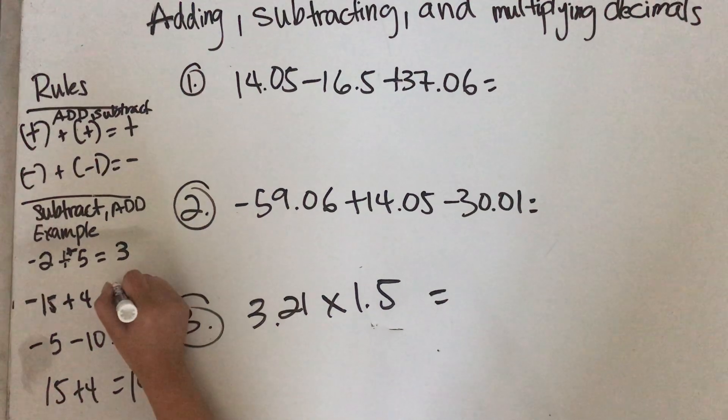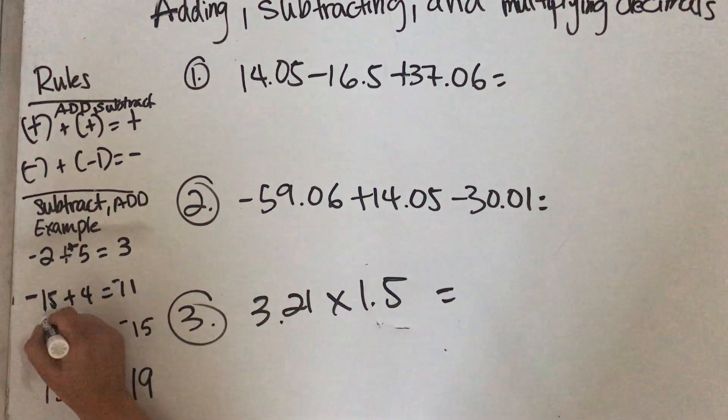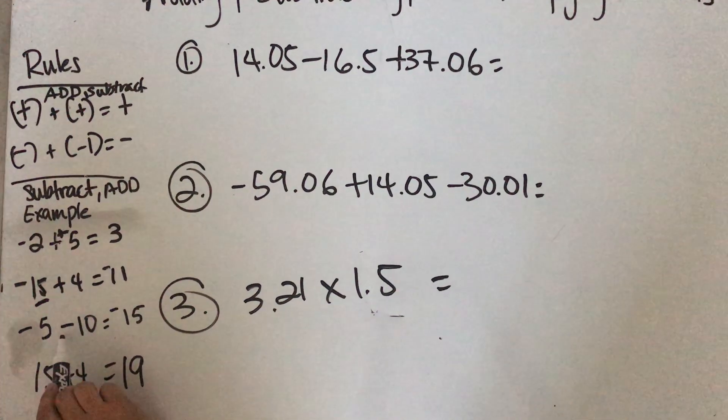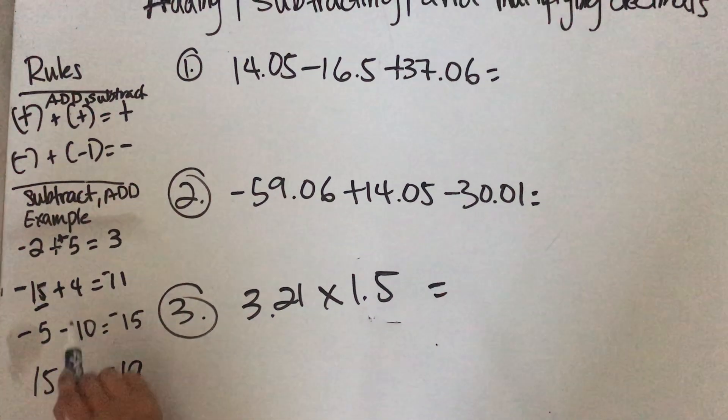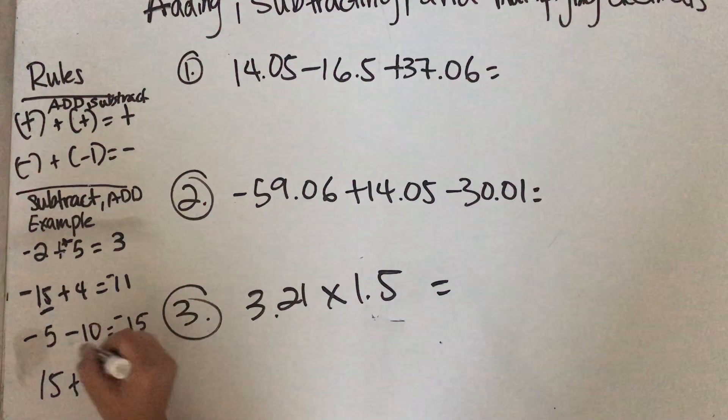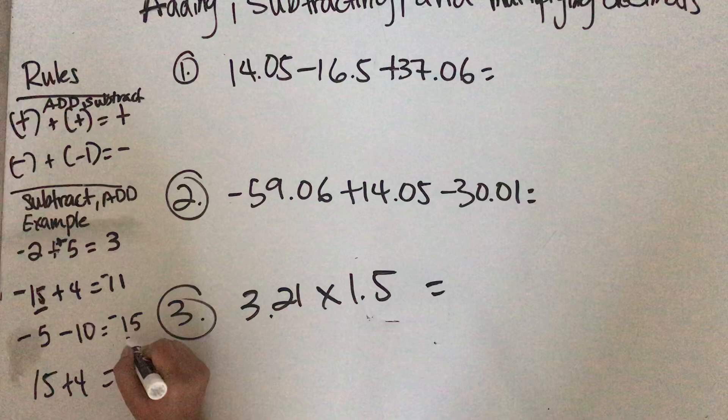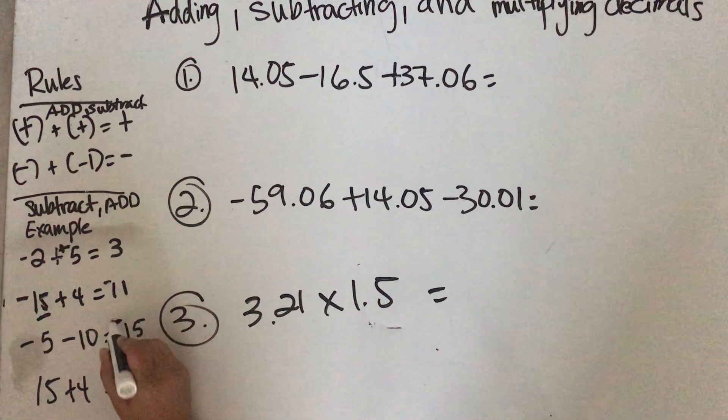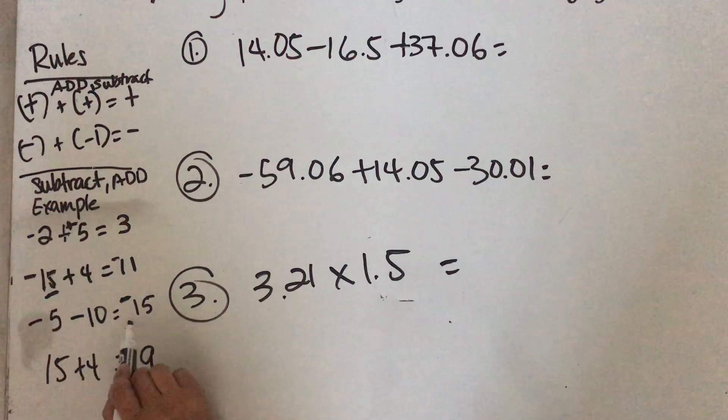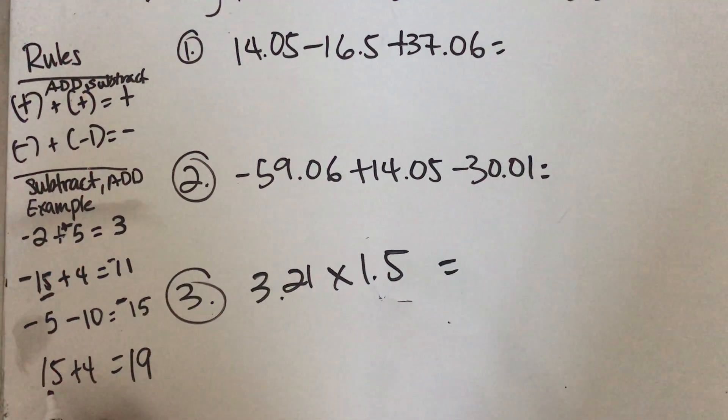You put the negative sign on the biggest number. Here, negative 5 minus negative 10: when you do negative minus negative it becomes positive, you add them together, but your answer will still be negative. So negative 5 minus negative 10 is negative 15.